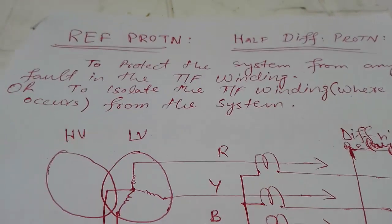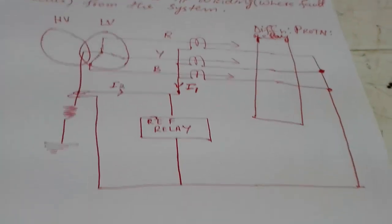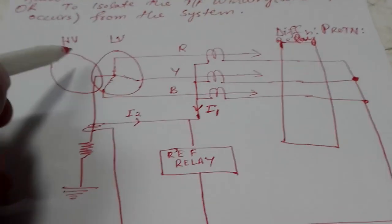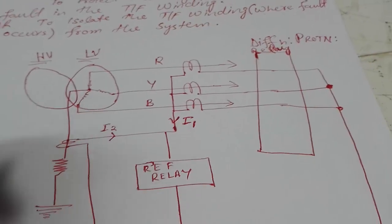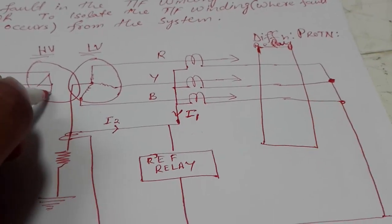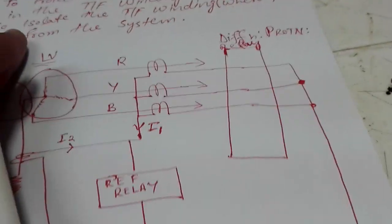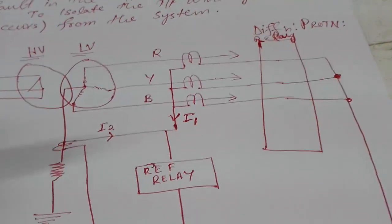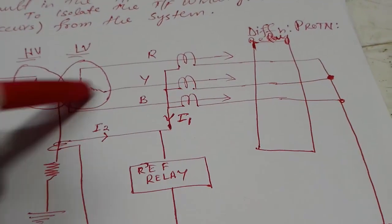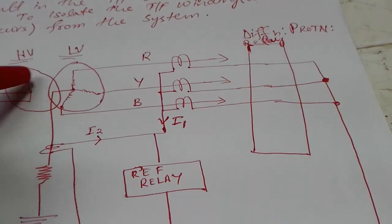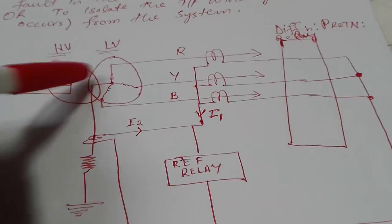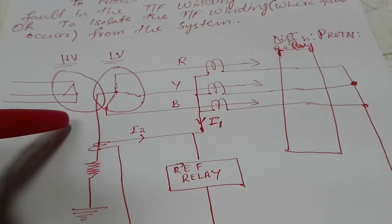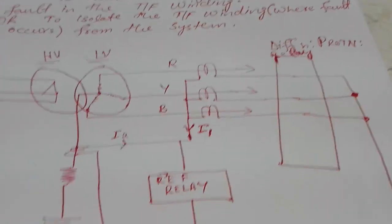The scheme isolates the transformer winding where a fault occurs. For example, this is the HV side of the transformer and this is the LV star side. This section will not be considered in the REF protection. Sometimes it is also called half differential protection, because it only considers the LV side or only the HV winding, depending on which side the scheme is connected to.